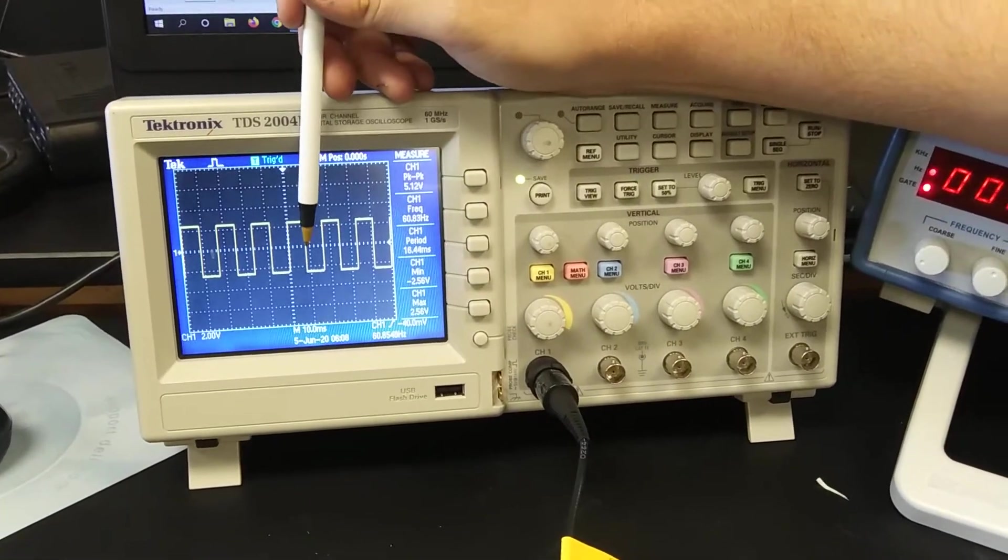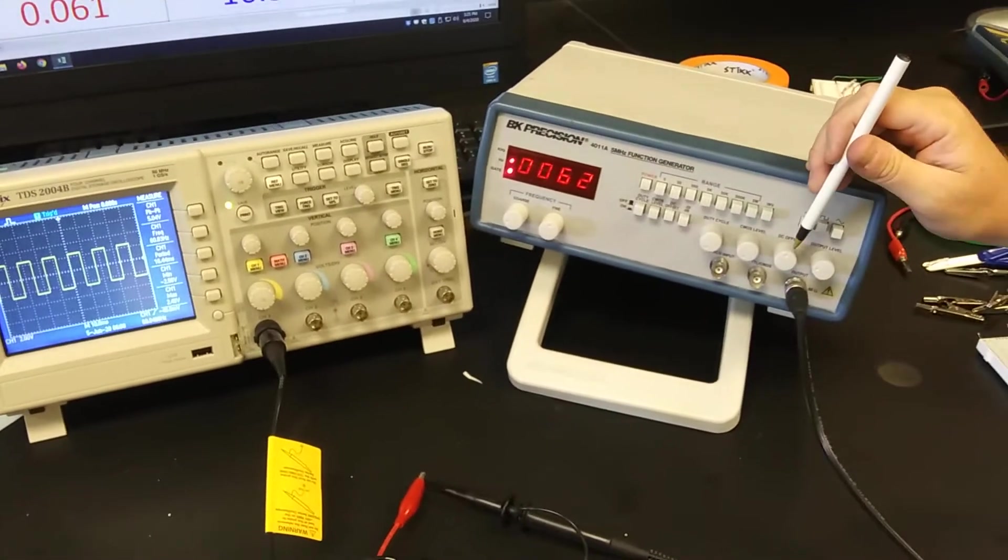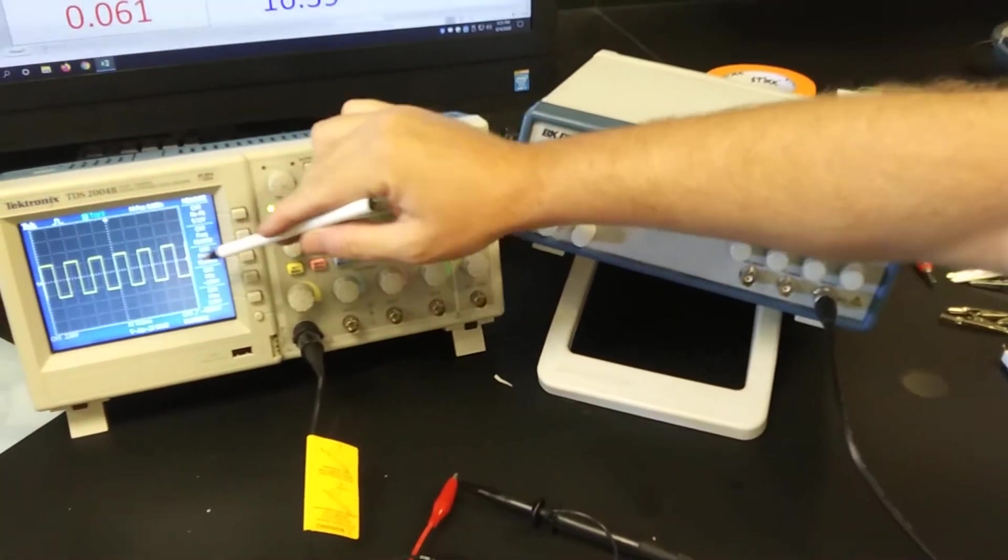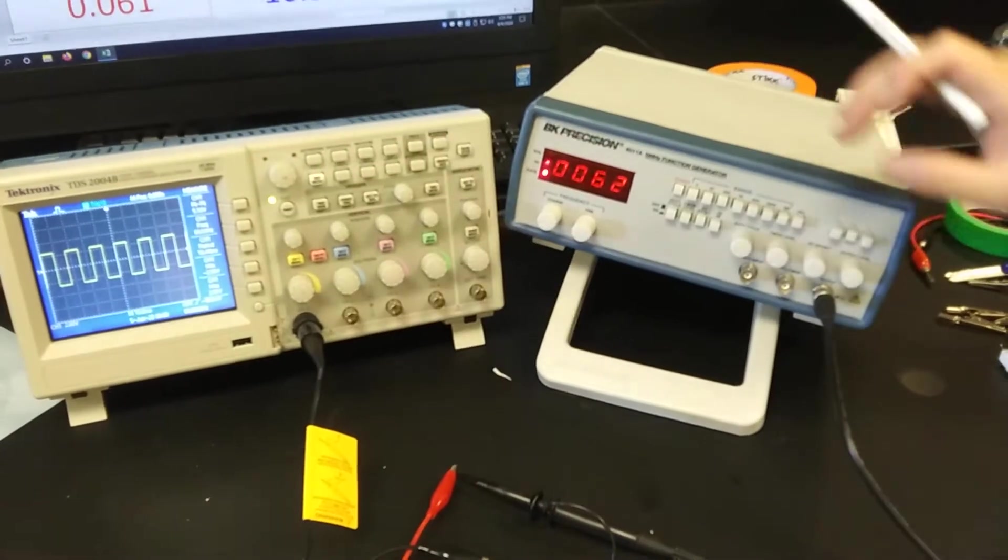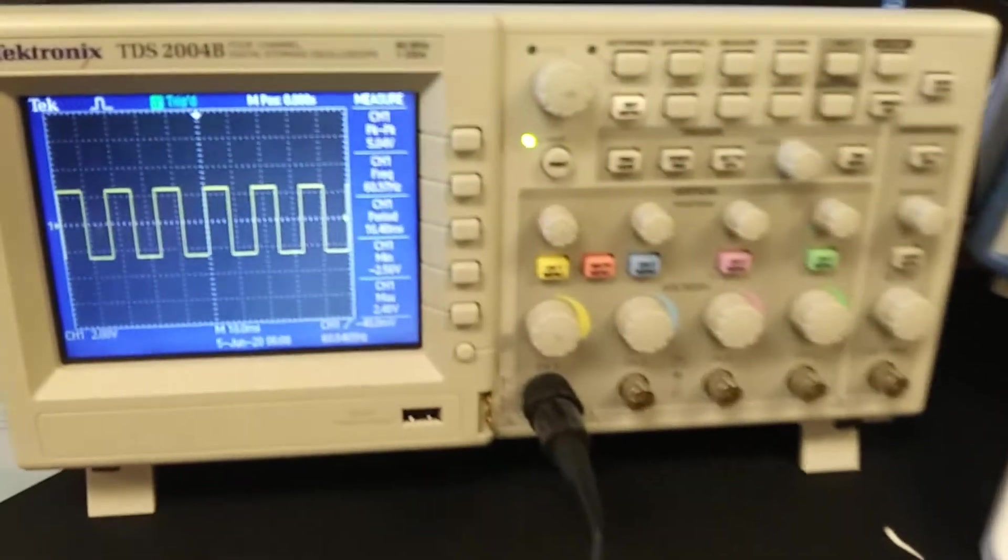Now let's go back over to here. I've engaged this DC offset, I'm going to turn this knob and watch what happens to the min and max.